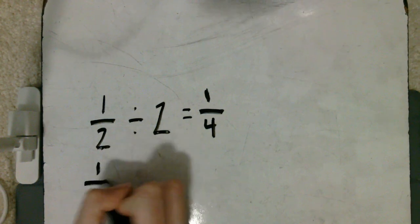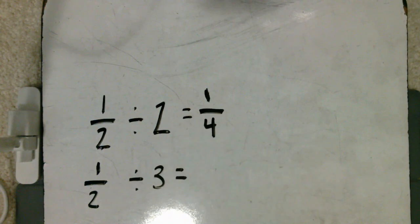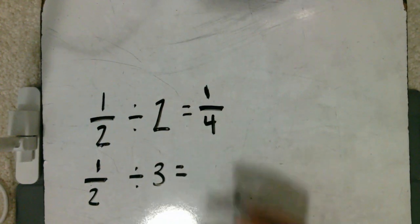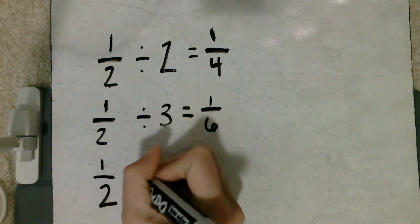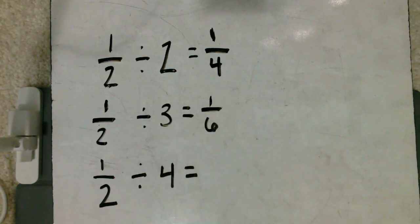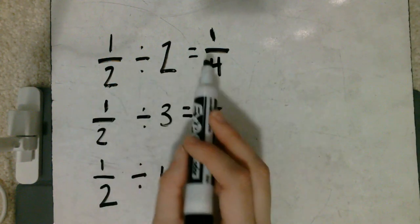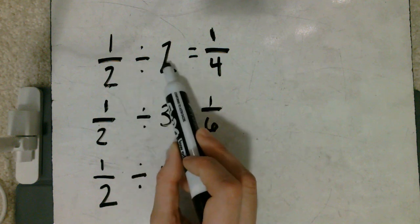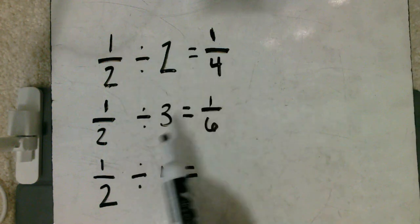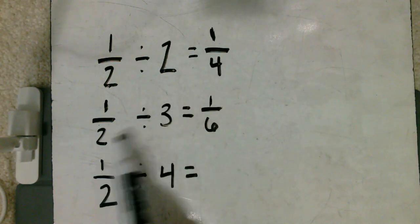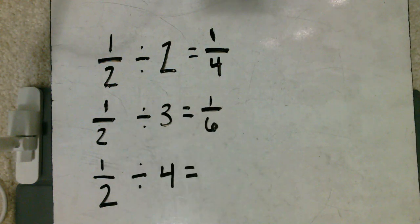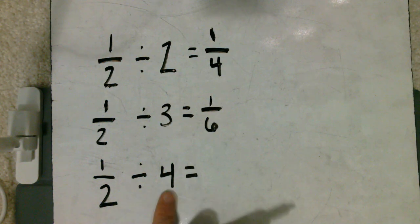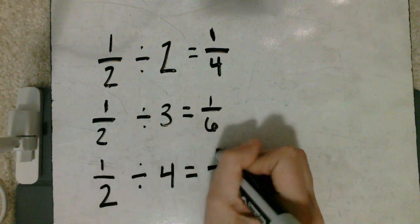Underneath where we wrote that, we're going to write one half divided by three equals one sixth. We can see a pattern starting here. Let's continue: one half divided by four equals... In the above two problems, when we did one half divided by two, we got one fourth. Our denominator times our whole number gave us our denominator on this side, and our numerator stayed the same. The same thing happened in our second problem. Let's see if we can figure out how that pattern would continue. If we did our denominator times our whole number to get our denominator, we would get eight and leave the one the same.